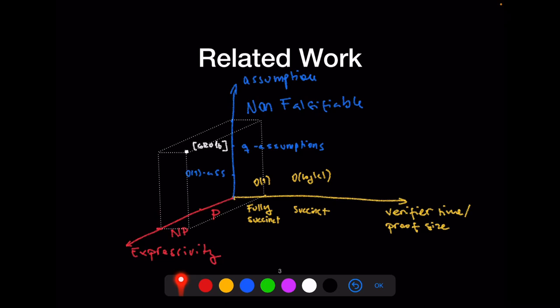We can start with Groth16, which is kind of optimal in some sense and very attractive in practice because the size of the proof is just a constant number of group elements and the verification time is just a constant number of pairing evaluations — this is what we call in this work fully succinct. The expressivity allows you to show the validity of any NP statement, but this comes at a price: if you want succinct verification and proof size with such a large amount of expressivity, you need to rely on non-falsifiable assumptions.